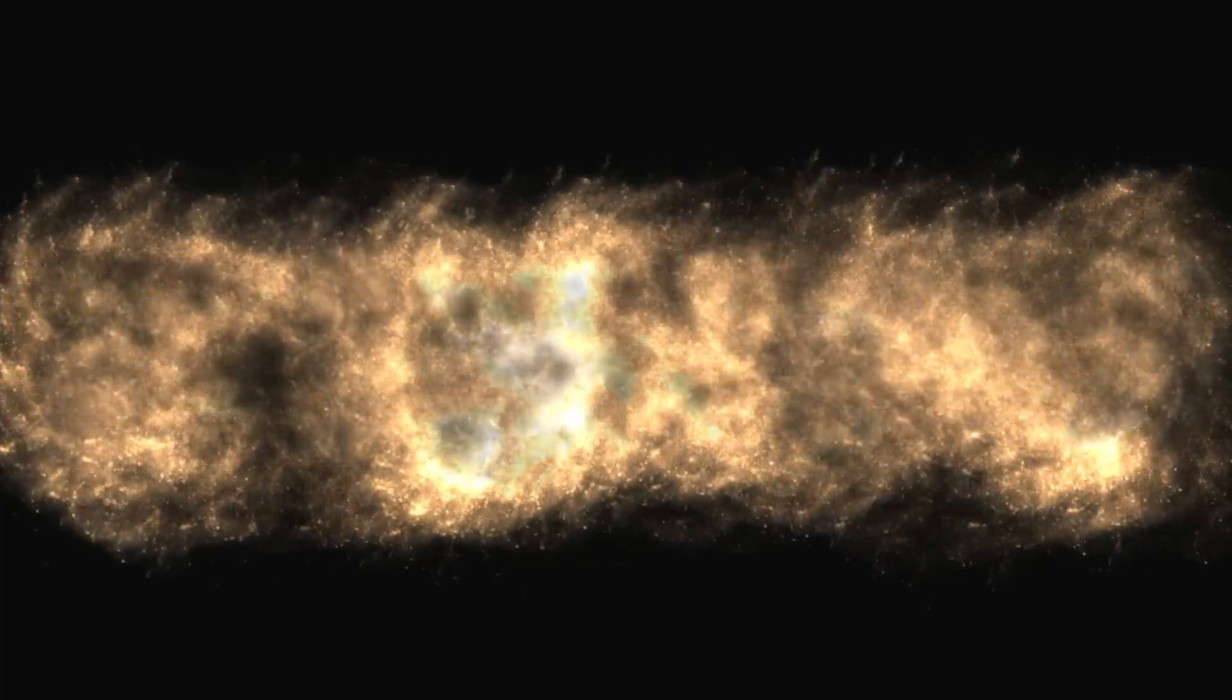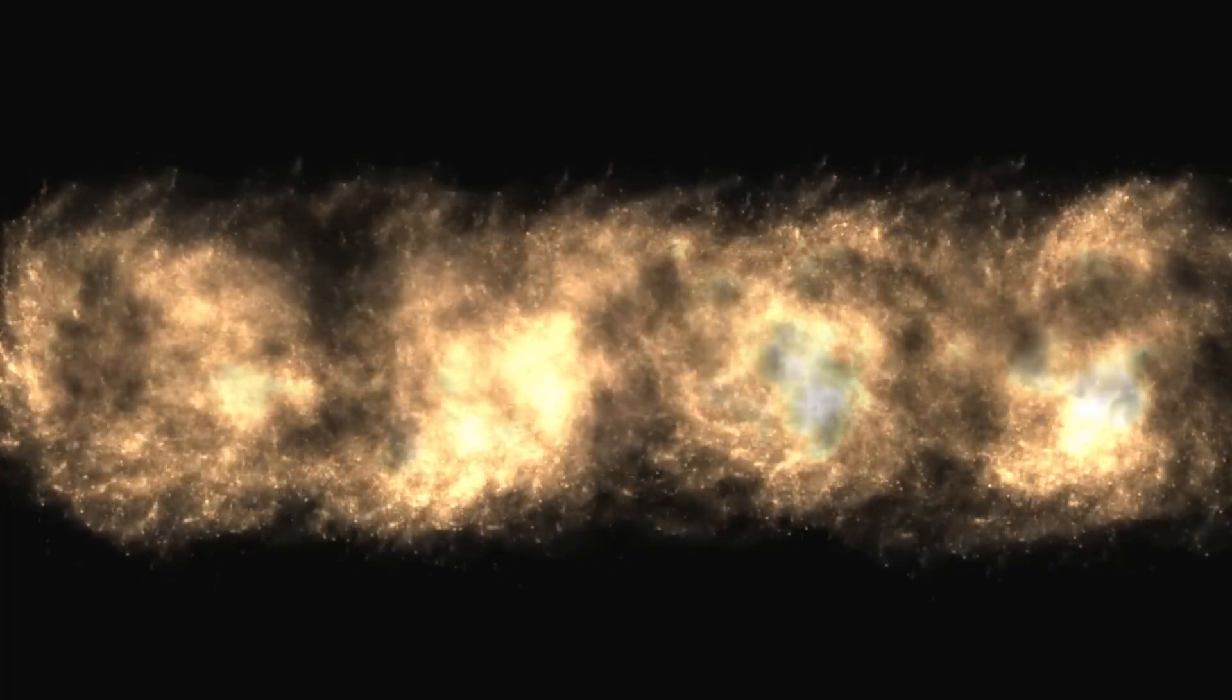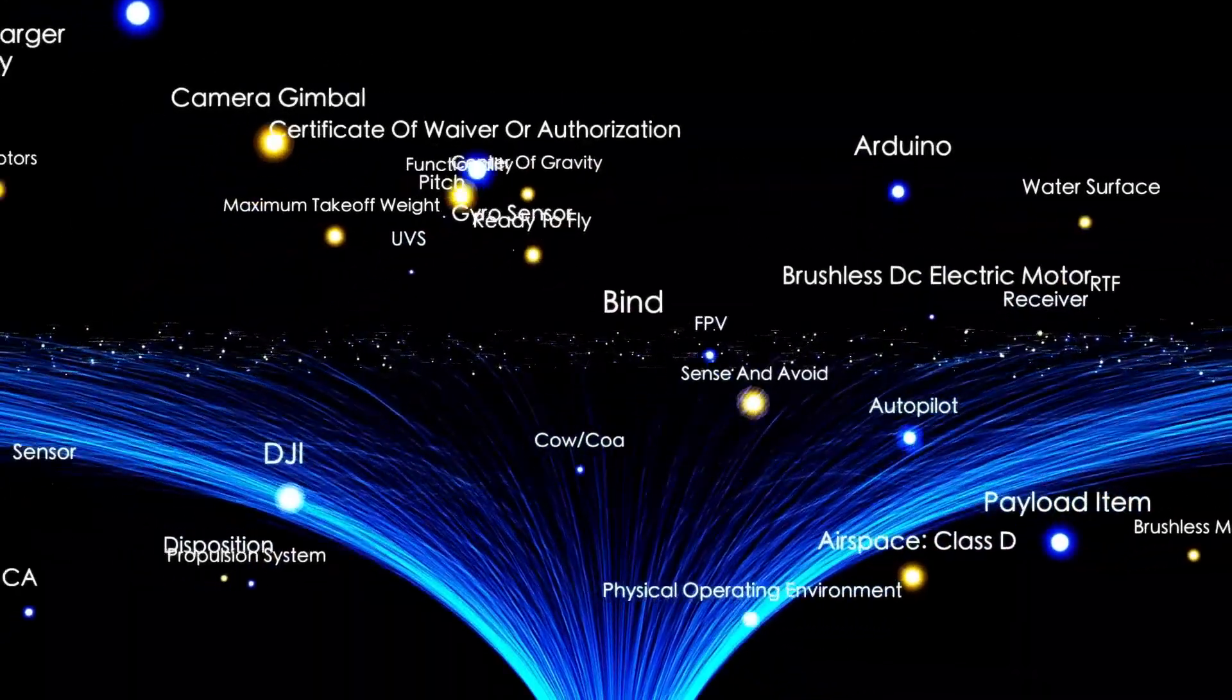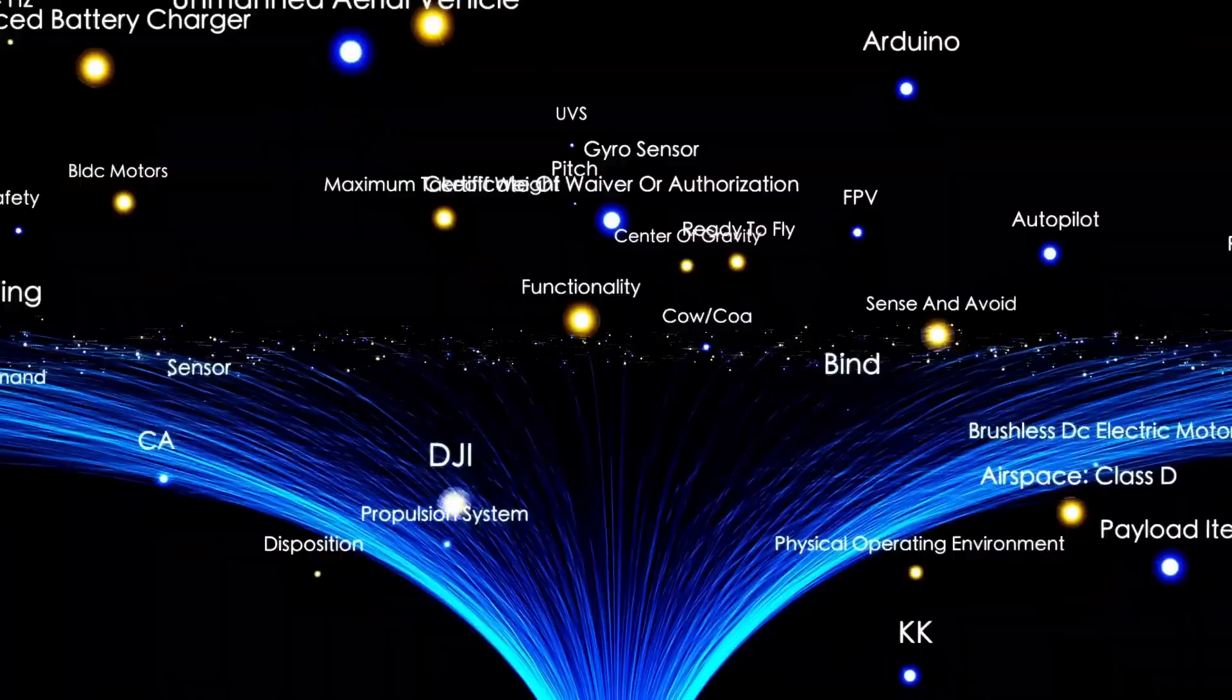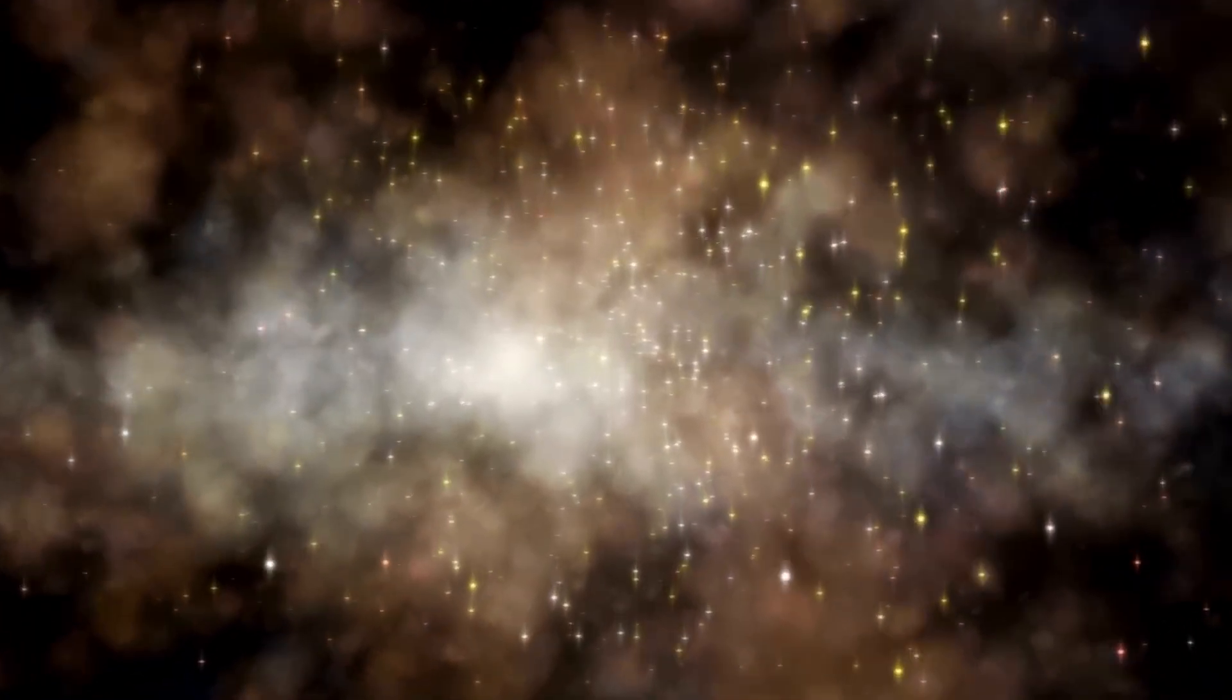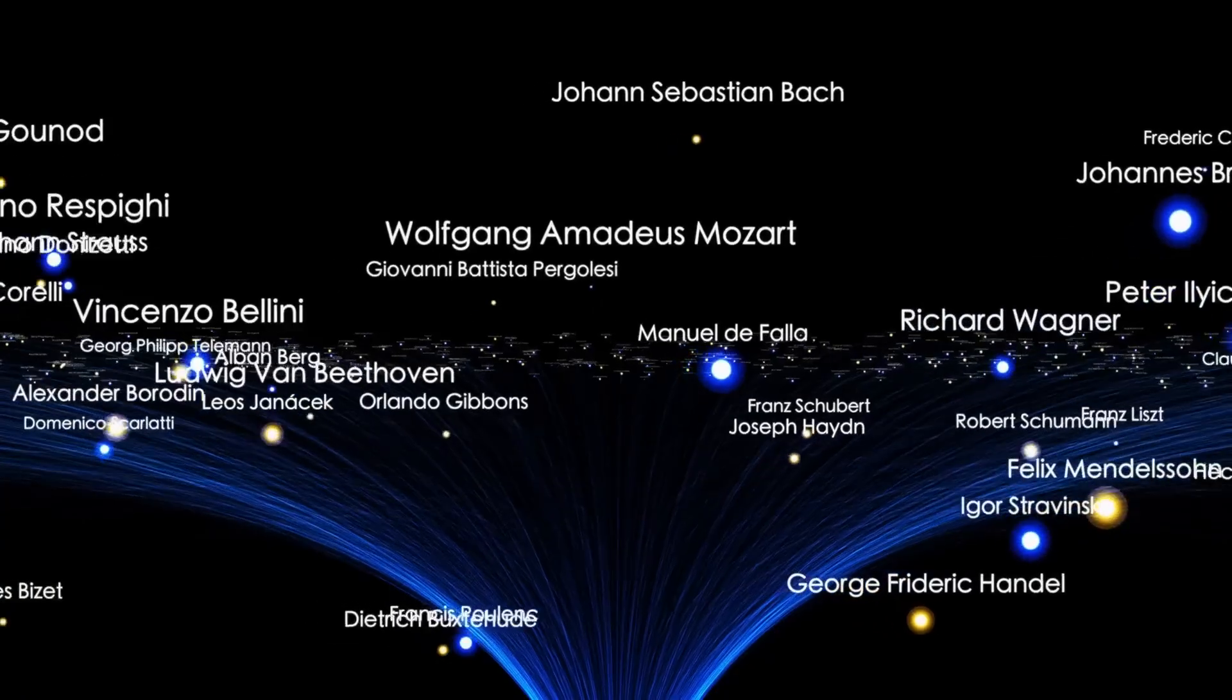This supercluster is home to approximately 100,000 galaxies, each brimming with hundreds of billions of stars and planets. And yet, even this is only a small part of the big picture. Within the observable universe, scientists estimate the existence of about 10 million similar superclusters.